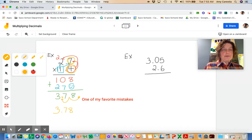So for the next example, I added a digit. It is 3 and 5 hundredths times 2 and 6 tenths.